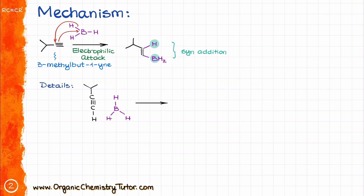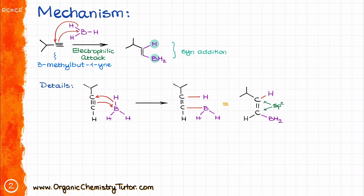I want to make sure you have a very firm understanding of what's going on with the first step of this mechanism. When we say that the pi electrons go onto the boron like this, we are making a new carbon-boron bond. And likewise, when we are showing the curved arrow from the H–B bond to a carbon, this means we are taking the hydrogen with all its electrons and moving it onto the carbon atom. And since carbons are now sp2 hybridized, we also change the geometry of the molecule to reflect that.